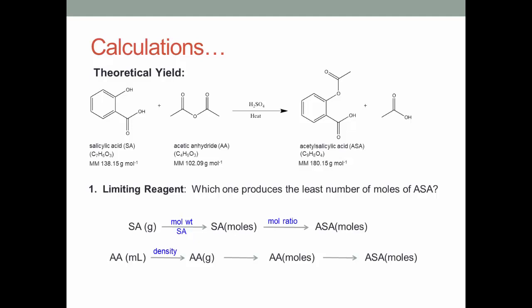Then, once you have mass of acetic anhydride, you will again use your molecular weight, in this case 102.09 grams per mole, to get to moles of acetic anhydride. And then use your mole ratio from the reaction to get to moles of ASA. The reagent which produces the least number of theoretical moles of ASA is then your limiting reagent.